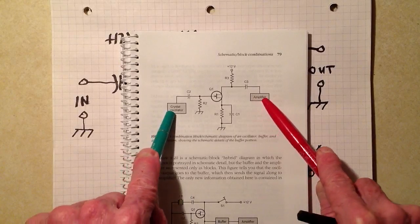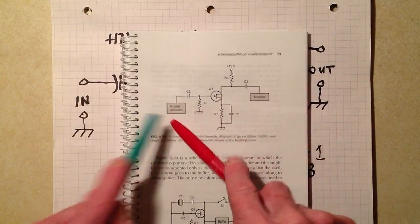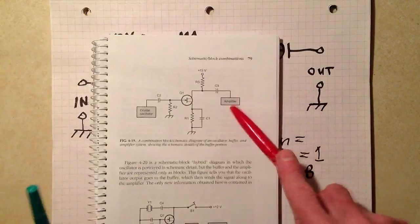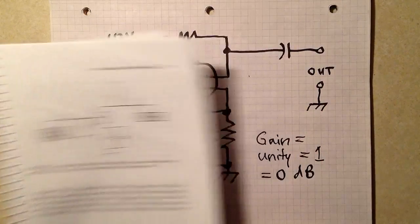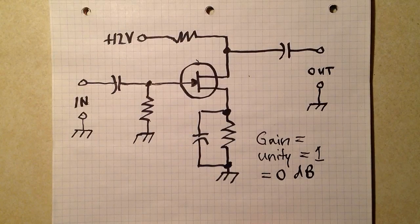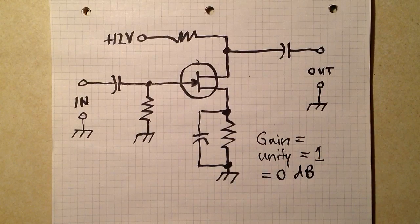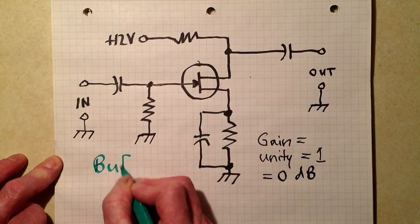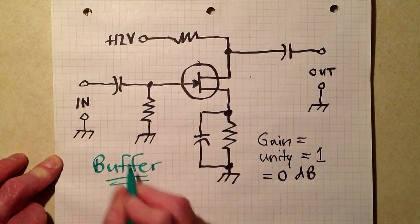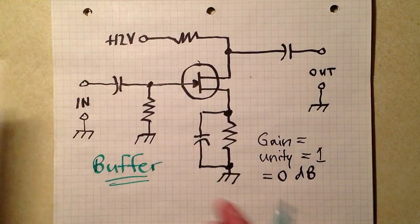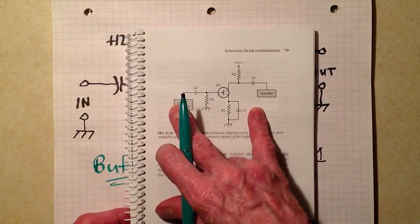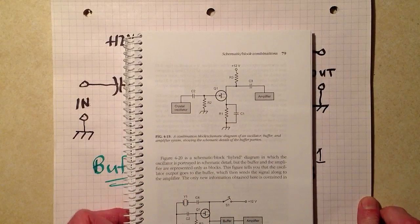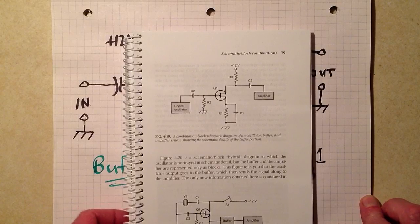Once again, though, this is a hybrid block and schematic diagram: crystal oscillator, buffer, right here, and an amplifier, you know, maybe two or three watts, something like that on 3.5 megahertz. So that's what a buffer is designed to do. It is just like its name would imply. It kind of creates a buffer zone between two other circuits or devices to help them both operate properly without bugging each other.